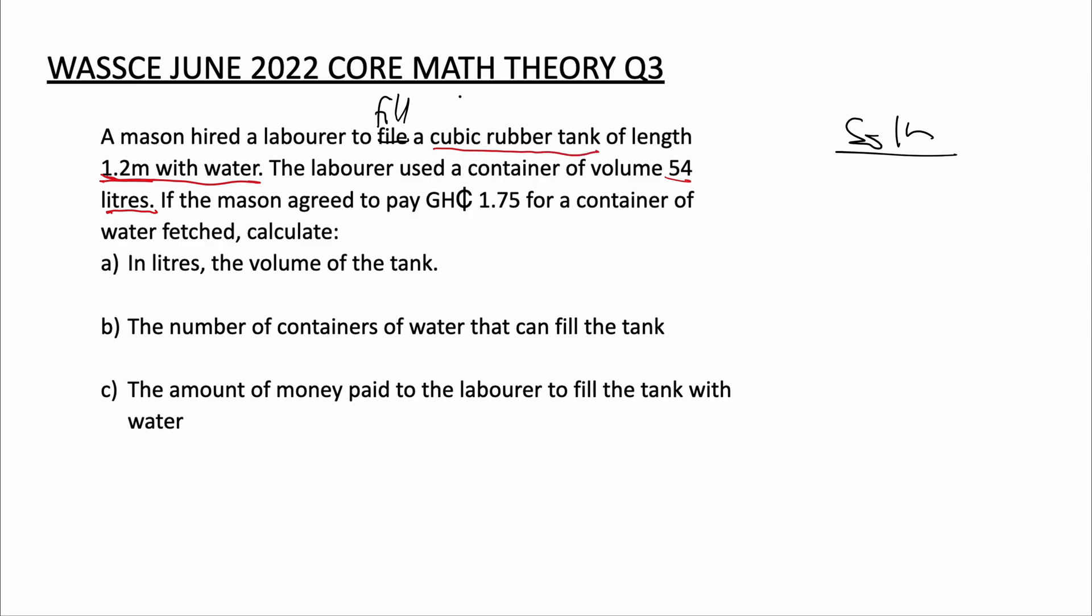So first, the volume of the cubic rubber tank is the same as the volume of a cube. So volume of a cube is equal to the length cubed. So the volume of tank will be equal to the length, which is 1.2 cubed, and this is the same as 1.728 meters cubed.